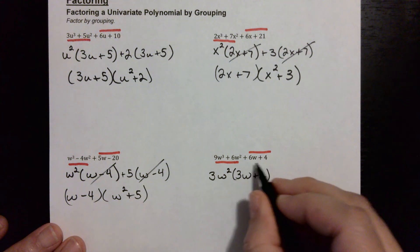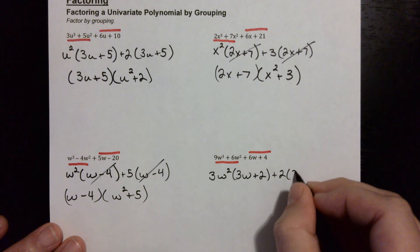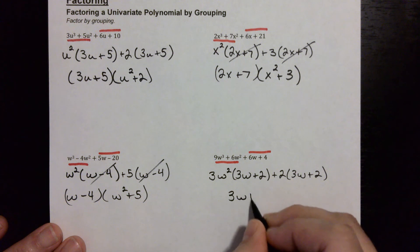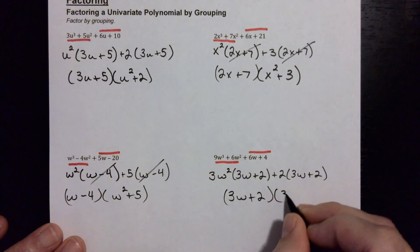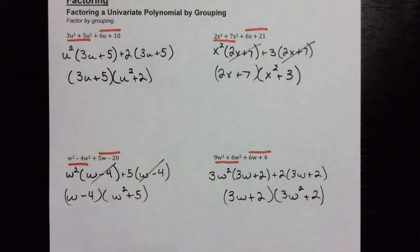And the next two, what's the biggest number that comes out of both of these? That would be a two, giving you three w plus two. And I take the three w plus two and put it out front, and that leaves me with three w squared plus two. And that's factored by grouping.